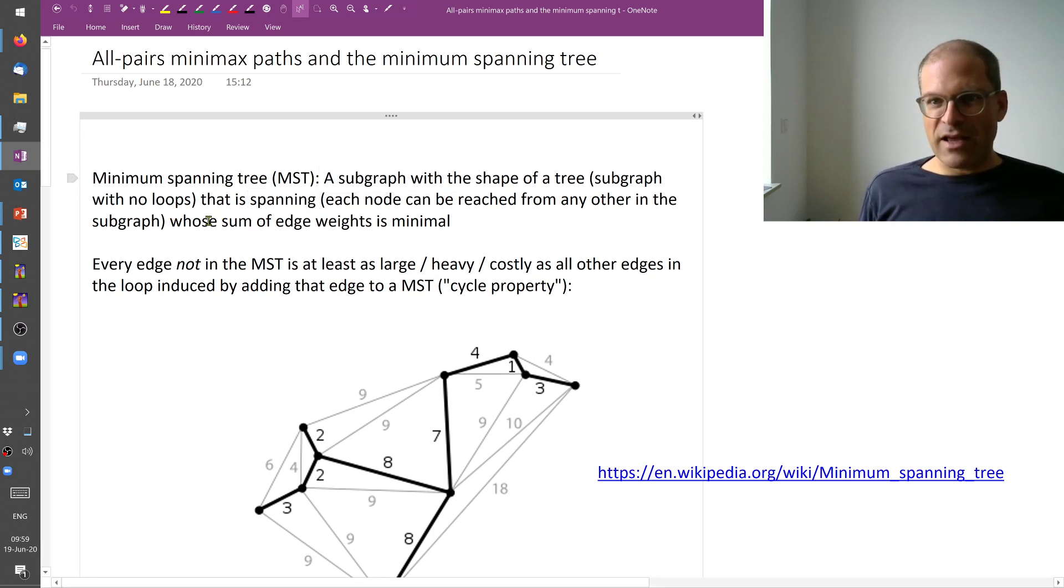It should be spanning and the sum of the edge weights should be as small as possible. It turns out that this subgraph will have the shape of a tree. The definition of a tree is that it's a graph with no loops and this result is called the minimum spanning tree.